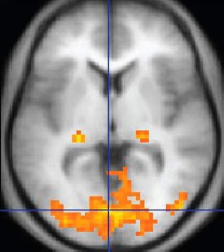MRI for imaging anatomical structures or blood flow does not require contrast agents as the varying properties of the tissues or blood provide natural contrasts. However, for more specific types of imaging, exogenous contrast agents may be given intravenously, orally, or intra-articularly. The most commonly used intravenous contrast agents are based on chelates of gadolinium. In general, these agents have proved safer than the iodinated contrast agents used in X-ray radiography or CT.